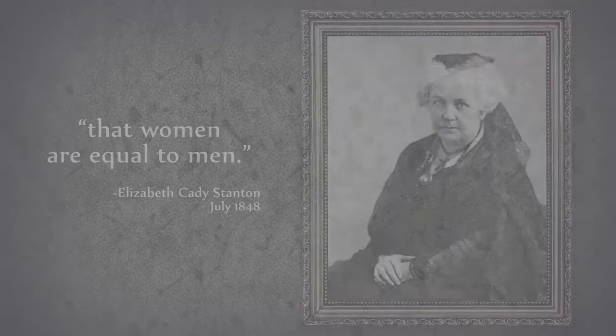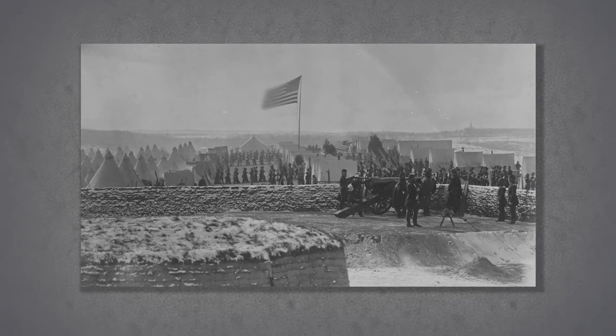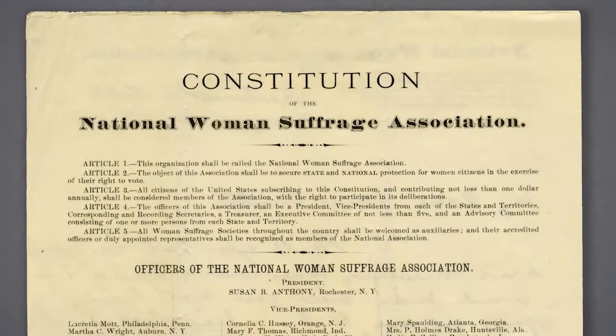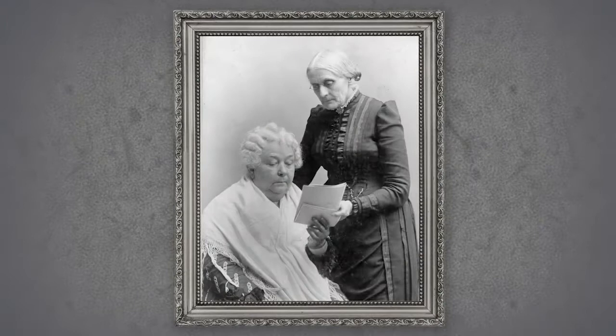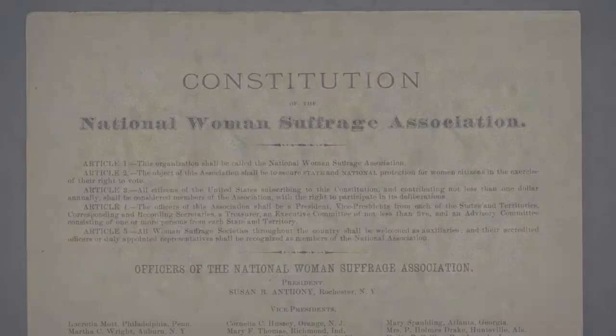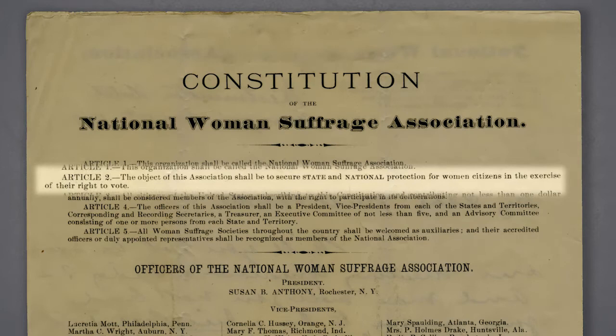The women's suffrage movement would wane during the Civil War, but reemerged with the passing of the 15th Amendment. The amendment granted voting rights for all U.S. citizens; however, only men were considered citizens. In 1869, the National Women's Suffrage Association was founded by Elizabeth Cady Stanton and another prominent suffrage leader, Susan B. Anthony. The NWSA took a stance against the 15th Amendment because it did not extend universal suffrage.